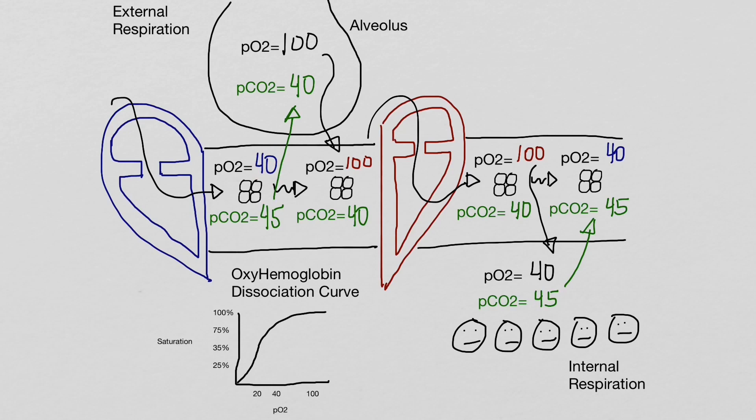For example, when the partial pressure of oxygen is 40, the hemoglobin will be saturated at 75%, and when the partial pressure of oxygen is 100, hemoglobin will be saturated at 98% or near 100%. Using the dissociation curve, we can determine that each hemoglobin will deliver one oxygen during internal respiration.